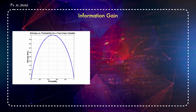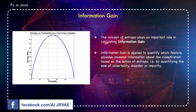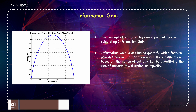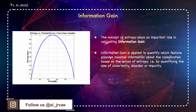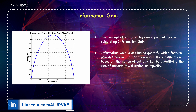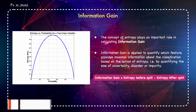The concept of entropy plays an important role in calculating Information Gain. Information gain is applied to quantify which feature provides maximal information about the classification, based on the notion of entropy — that is, by quantifying the size of uncertainty, disorder, or impurity. Information gain equals entropy before the split minus entropy after the split.